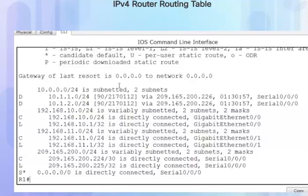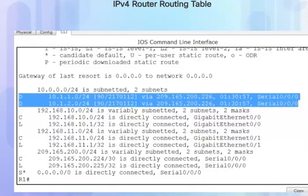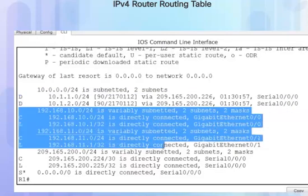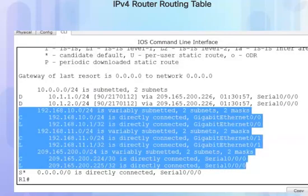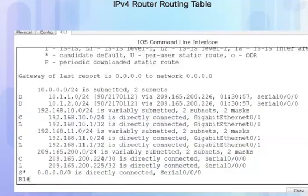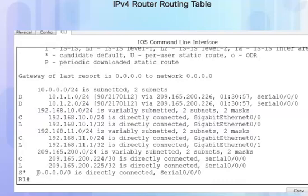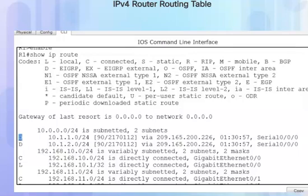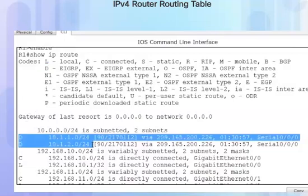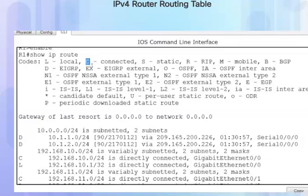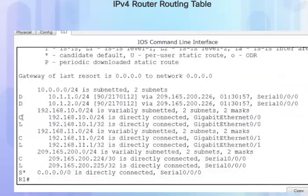For instance, looking at these two entries, these are remote network routes. These entries here are for connected network routes. The last entry in the routing table is a default route, or gateway of last resort — notice the quad-zero all-networks address with all-zeros netmask. Looking at the codes at the top, D stands for EIGRP, making these our two remote networks. The letter C stands for connected, showing us entries starting with C are our connected network routes.